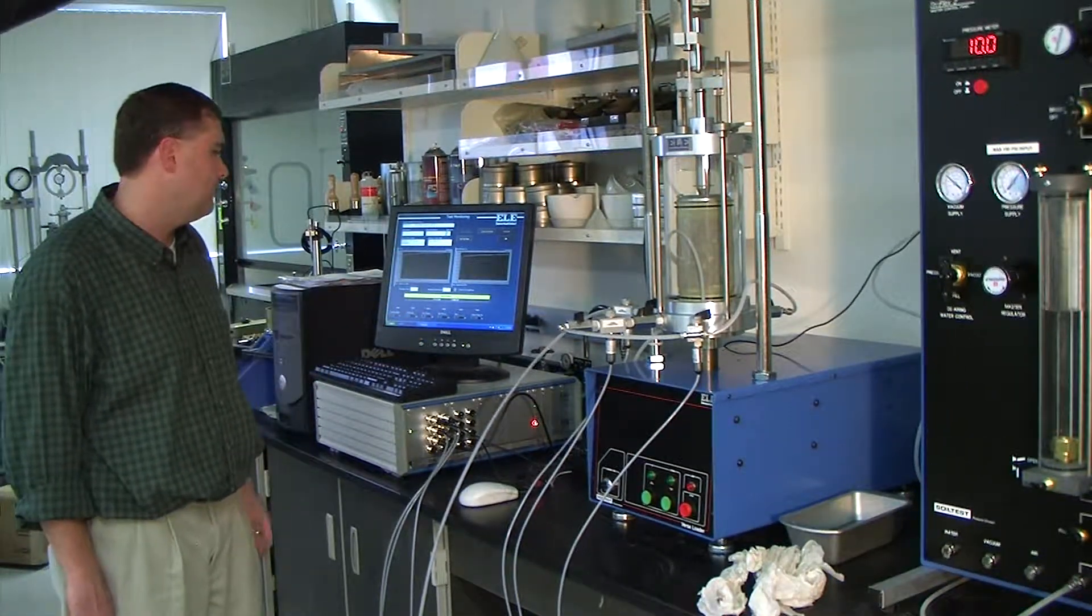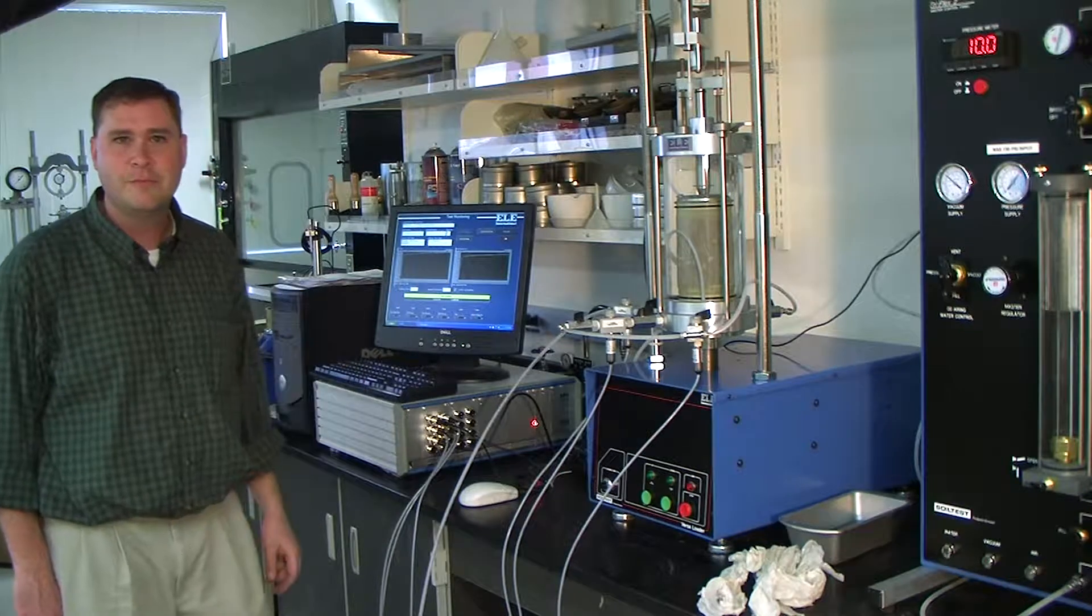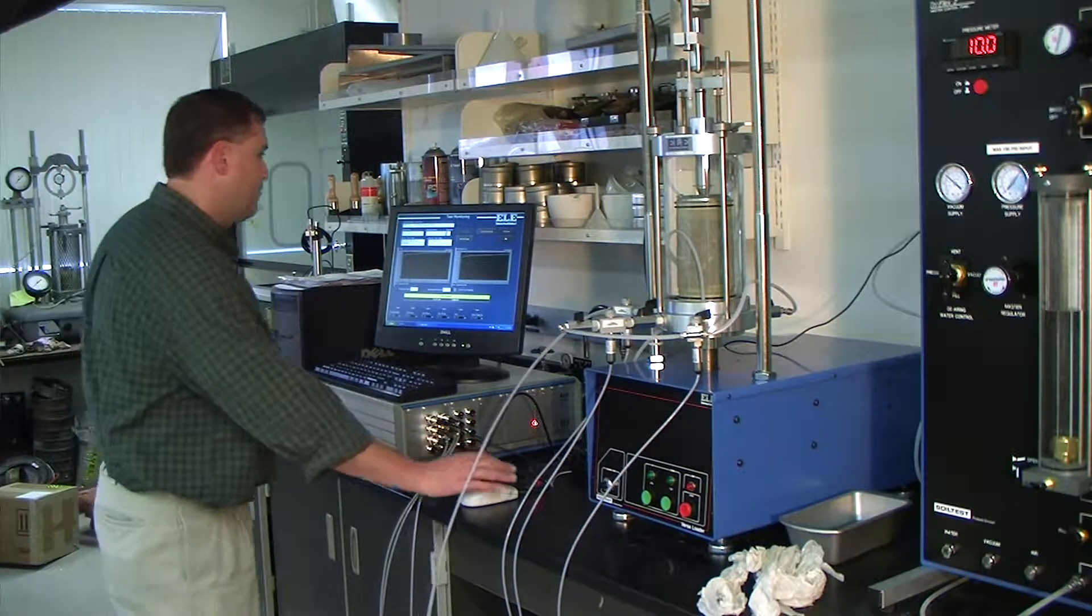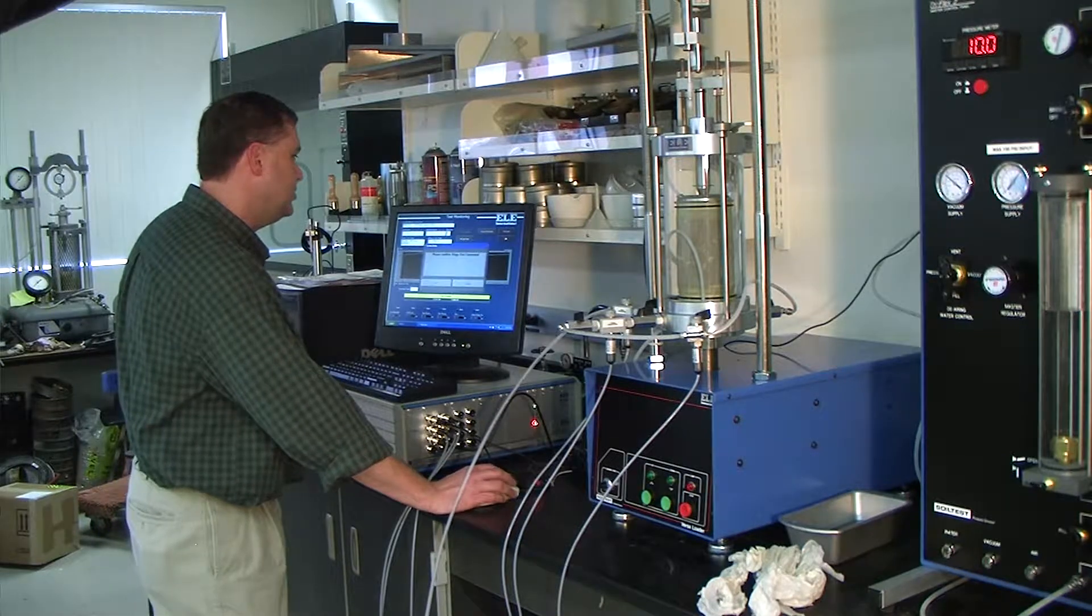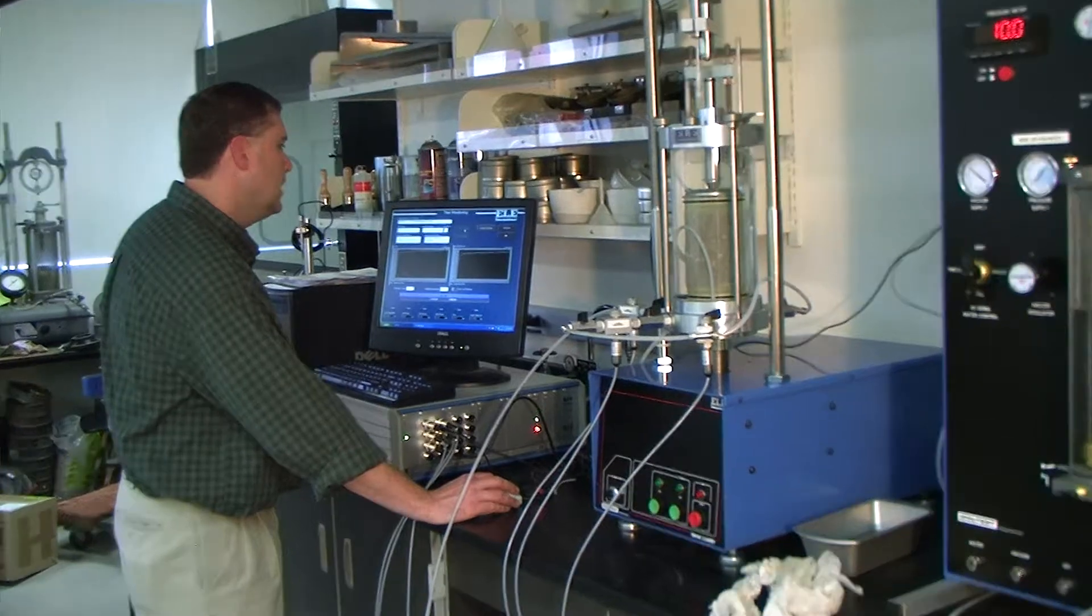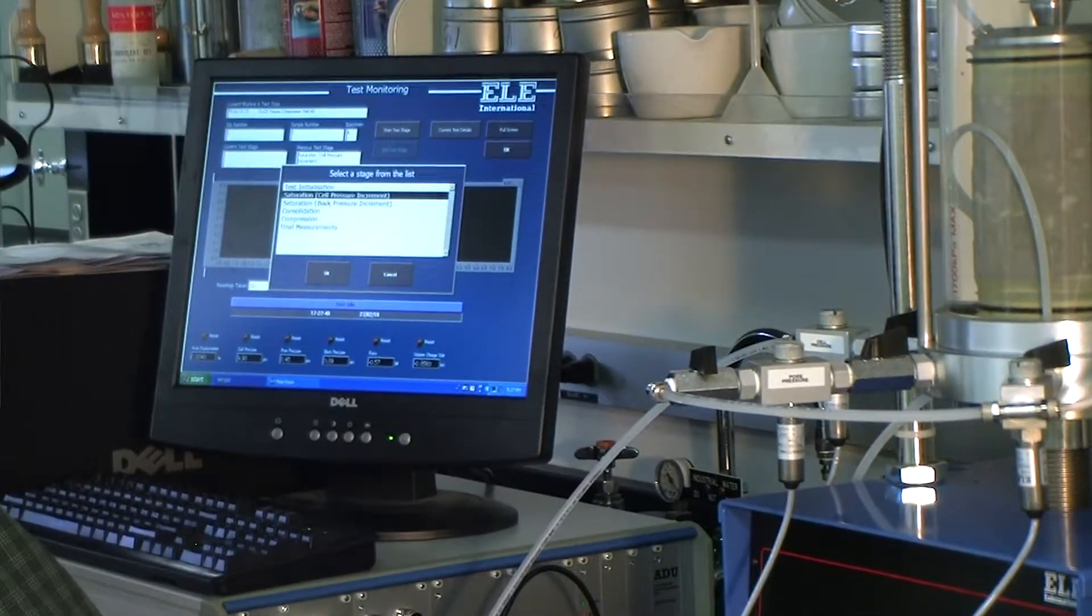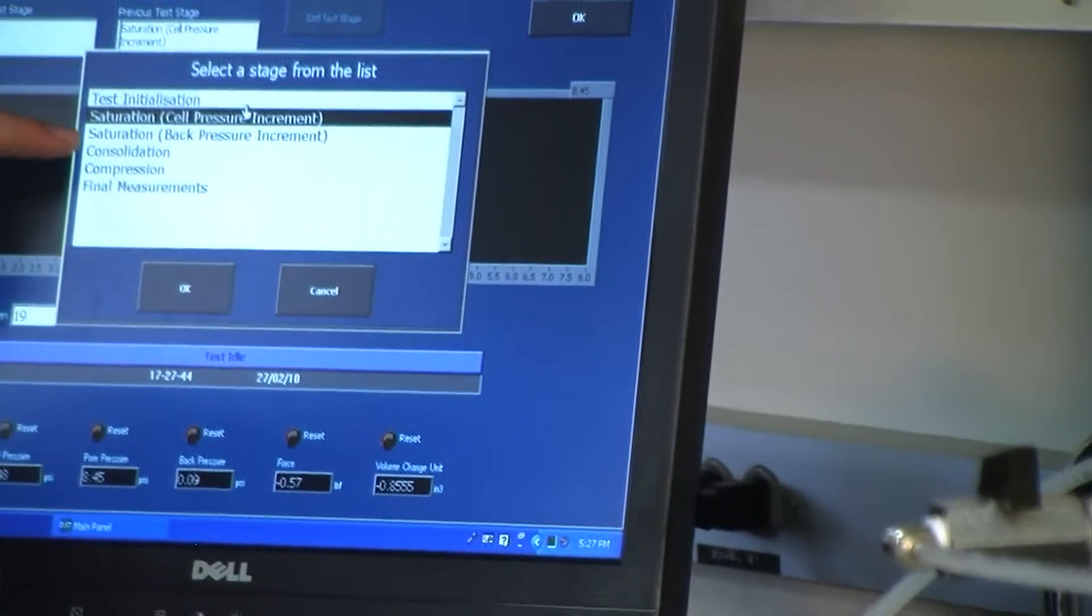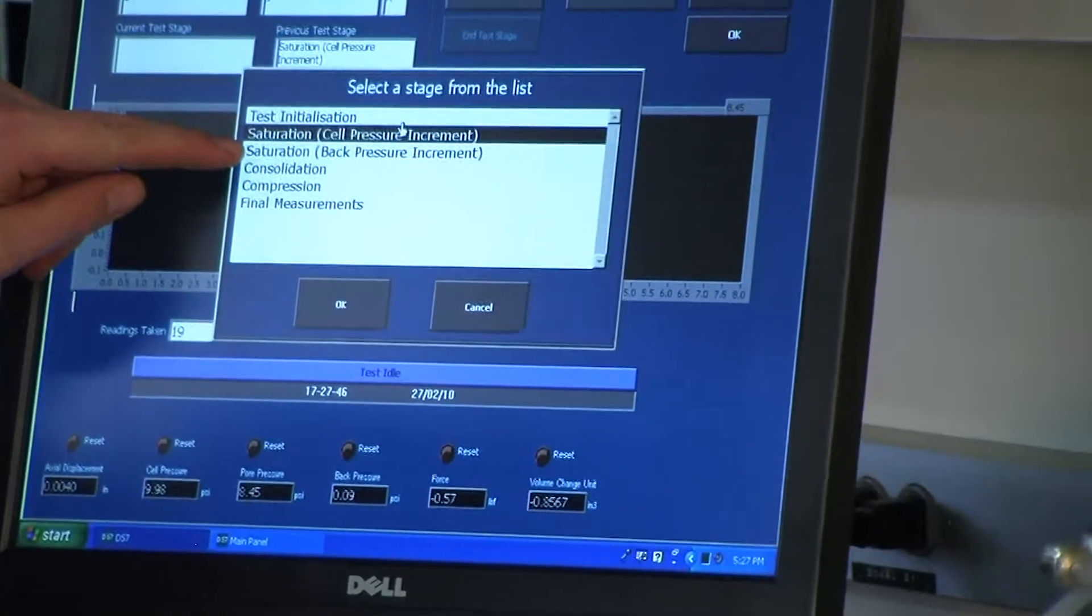So we obviously need to infiltrate the sample with pressurized water to remove the air voids that are still in the sample. Okay, so we're going to end the test stage. Then we're going to start the test stage, and then again, because we didn't have 0.95, we don't skip to go to consolidation. We have to backpressure saturate now.